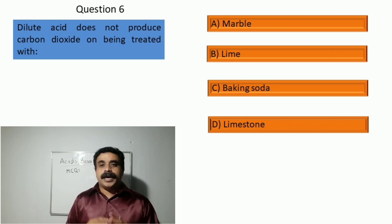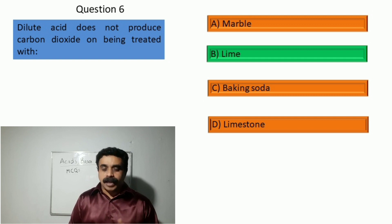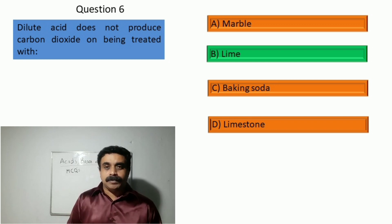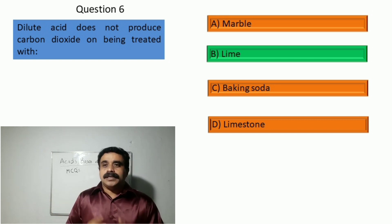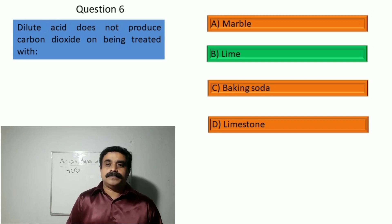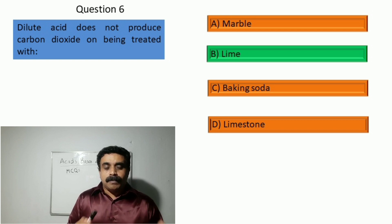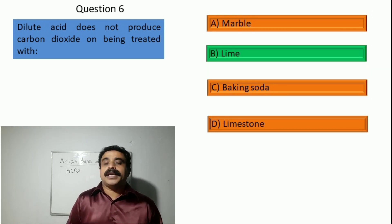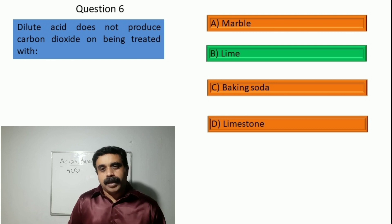The correct answer is option B, lime, because lime is calcium hydroxide and does not contain carbon to produce carbon dioxide. Marble and limestone are calcium carbonate, and baking soda is sodium bicarbonate — all of which contain carbonates or bicarbonates.